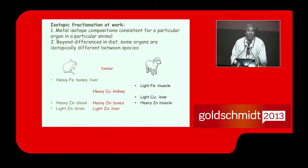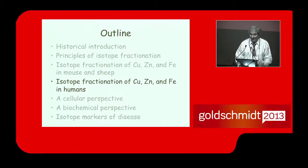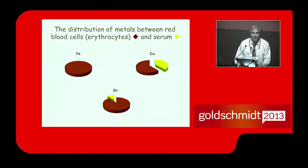And we got the same consistency. And so we can compare different animals here. The conclusions are metal isotope composition consists of a particular organ in a particular animal. That's something important. And beyond differences in diet, some organs are isotopically different between species. So you see what is particular to the mice here, what is particular to the sheep here, and what is similar. We remember that kidney has isotopically heavy copper in all the animals. The bones are isotopically heavy in zinc because of phosphates. And that liver is isotopically light in zinc.